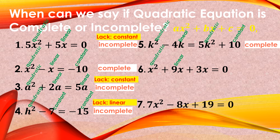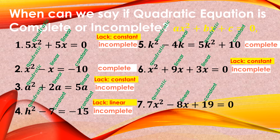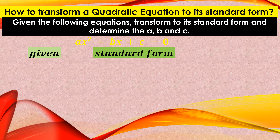For number 6, we have the quadratic, the linear, and another linear — the constant term is lacking, so that is incomplete. We can already identify when a quadratic equation is complete or incomplete: it must have all three terms — quadratic, linear, and constant — equated to 0.